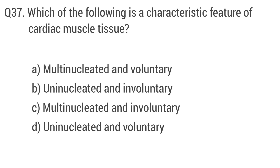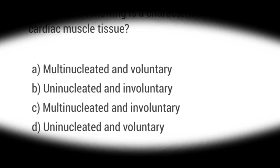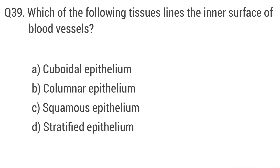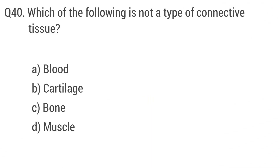Question 37: Which of the following is a characteristic feature of cardiac muscle tissue? The right answer is option B: uninucleated and involuntary. Question 38: Which of the following type of connective tissue connects muscles to bone? The right answer is option B: tendons. Question 39: Which of the following tissue lines the inner surface of blood vessels? The right answer is option C: squamous epithelium.